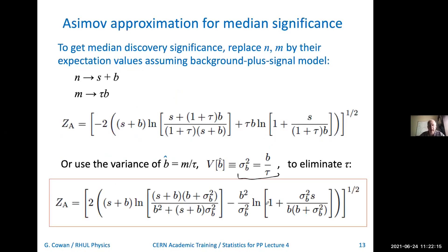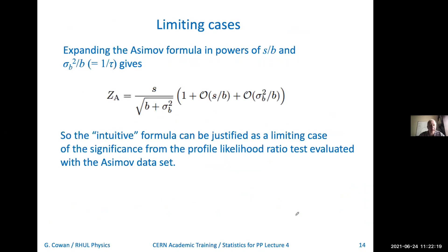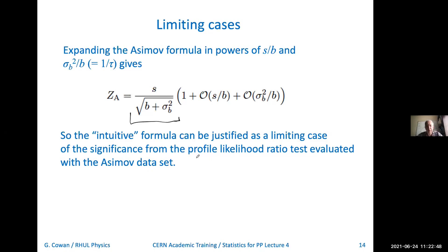If you expand the whole thing in a Taylor series, then lo and behold, you get s over the square root of b plus sigma b squared plus higher order terms of order s over b and sigma b squared over b — which is the same as 1 over tau. So that intuitive formula does have some formal justification as a limiting case of the formula we just derived.